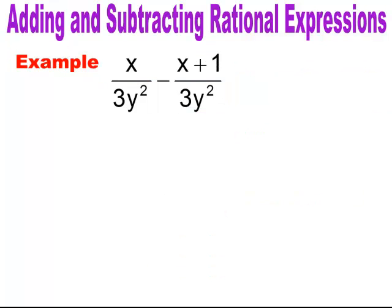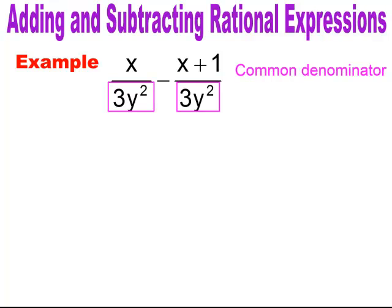In this next example, you see we have a common denominator of 3y squared. But in the second rational expression you have to be careful because in the numerator we have an algebraic expression, x plus 1. So you want to put parentheses around any expression in the numerator so that when you do the addition or subtraction you apply the distributive property. It's really important when you have an expression to put parentheses around it.